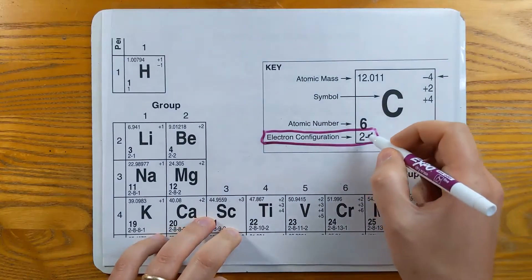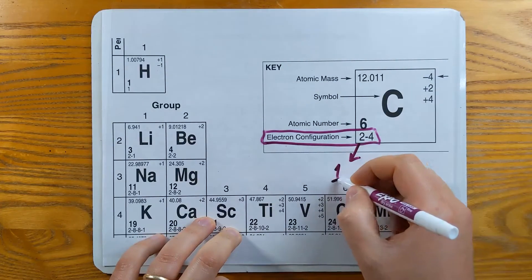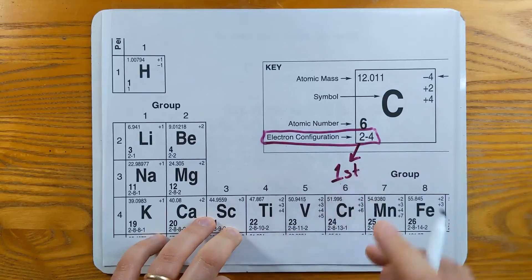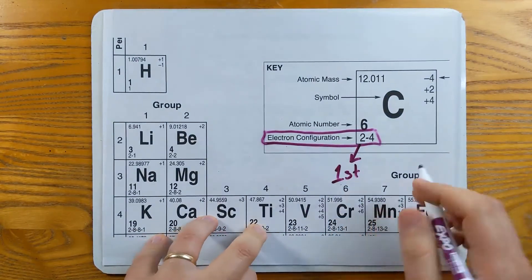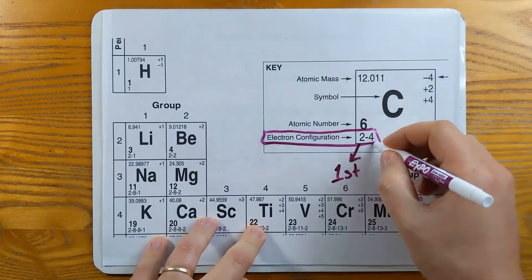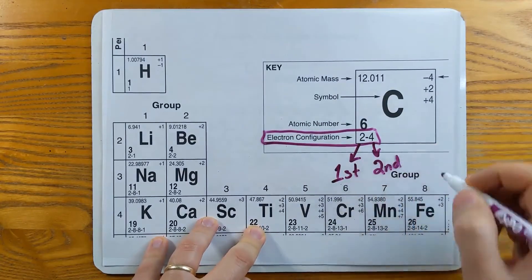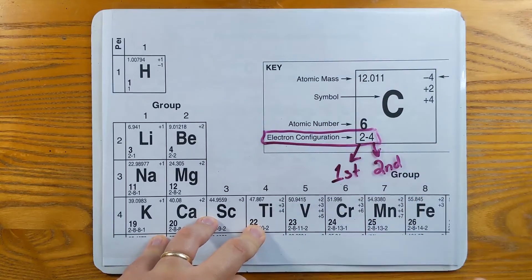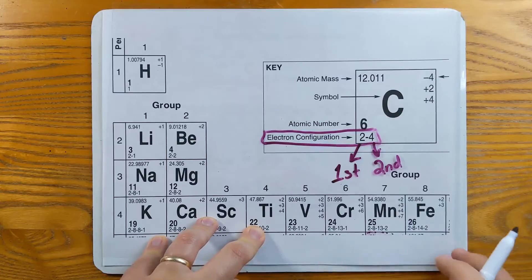The electron configuration is what we're going to use to draw the Bohr model. The first number represents how many electrons are in the first energy level. The second number represents how many electrons are in the second energy level. And some elements even have more energy levels, which we'll see in a bit.